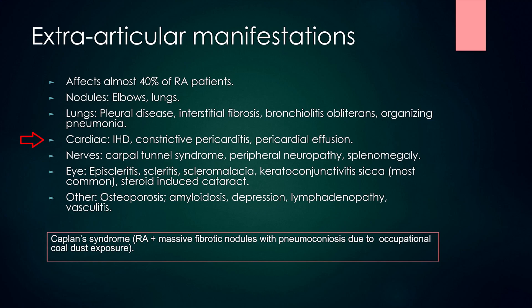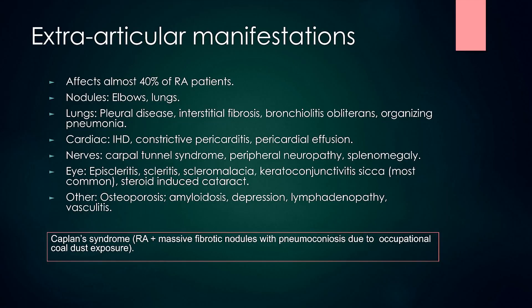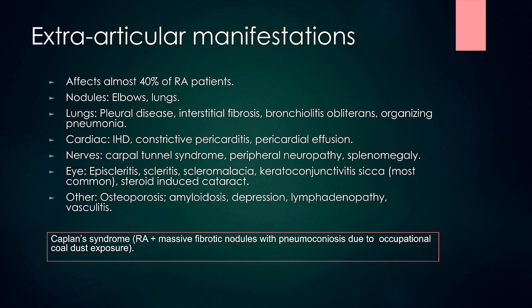In the heart, RA can cause ischaemic heart disease, constrictive pericarditis and pericardial effusion. In the nerves, it can cause carpal tunnel syndrome, which occurs due to entrapment or pressure over the median nerve, linked to amyloidosis caused by rheumatoid arthritis. It can also cause peripheral neuropathy and splenomegaly, which is associated with Felty syndrome.